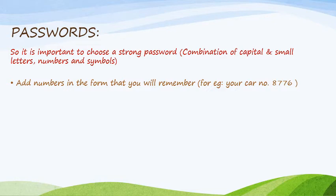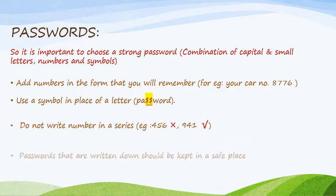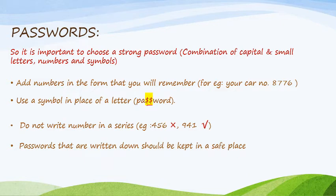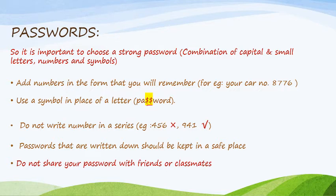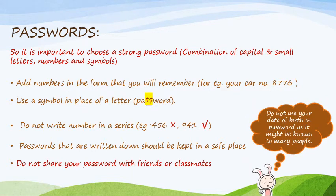To make a strong password it needs to be a combination of capital and small letters, numbers, and symbols. The numbers you use should be ones you can remember — for example, your car number or part of your mobile number — but remember, numbers should never be in a series. Use symbols in place of letters; for example, a dollar sign used in place of the letter S. Do not use a number series like 4-5-6 as it is easily traceable. Passwords that are written down should be kept in a safe place — avoid writing passwords, but if you must, keep them safe. Do not share your passwords with friends or classmates, however close you may be. And do not use your date of birth as your password as it might be known to many people.